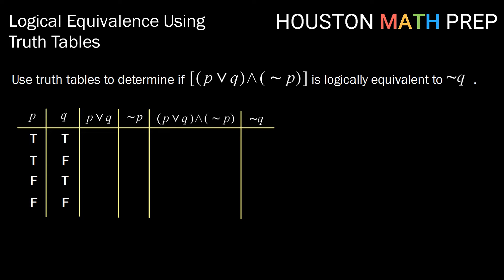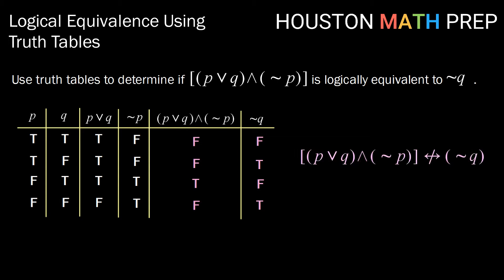Finally, we'll create not Q so we can compare. P or Q is true unless both are false: true, true, true, false. Not P is the opposite of P: false, false, true, true. The conjunction is only true when both are true, giving us false, false, true, false. Not Q is the opposite of Q: false, true, false, true. Comparing the two final columns, notice that we have different values — they are not exactly the same. That means these two are not logically equivalent, so we put a slash through our biconditional arrow.